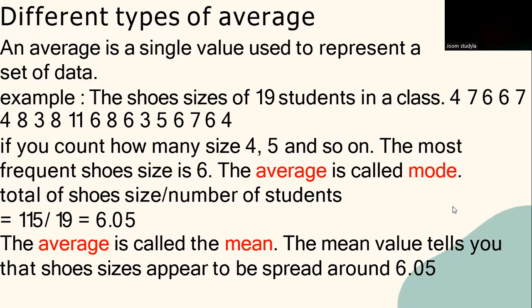Different types of average. An average is a single value used to represent a set of data. There are three types of average used in statistics, and the following shows how each can be calculated.